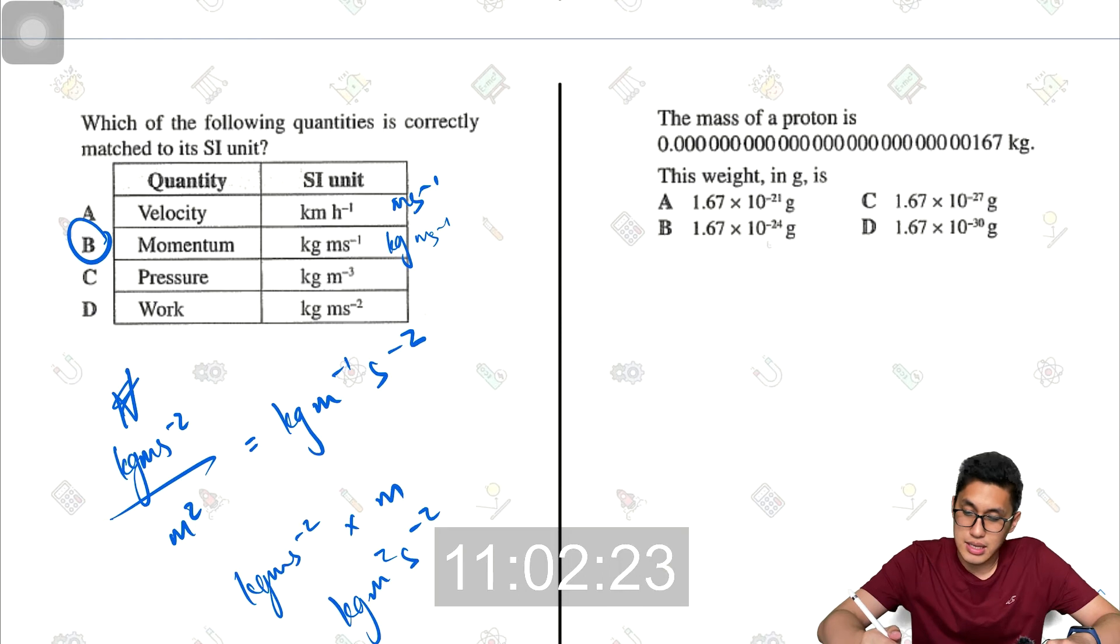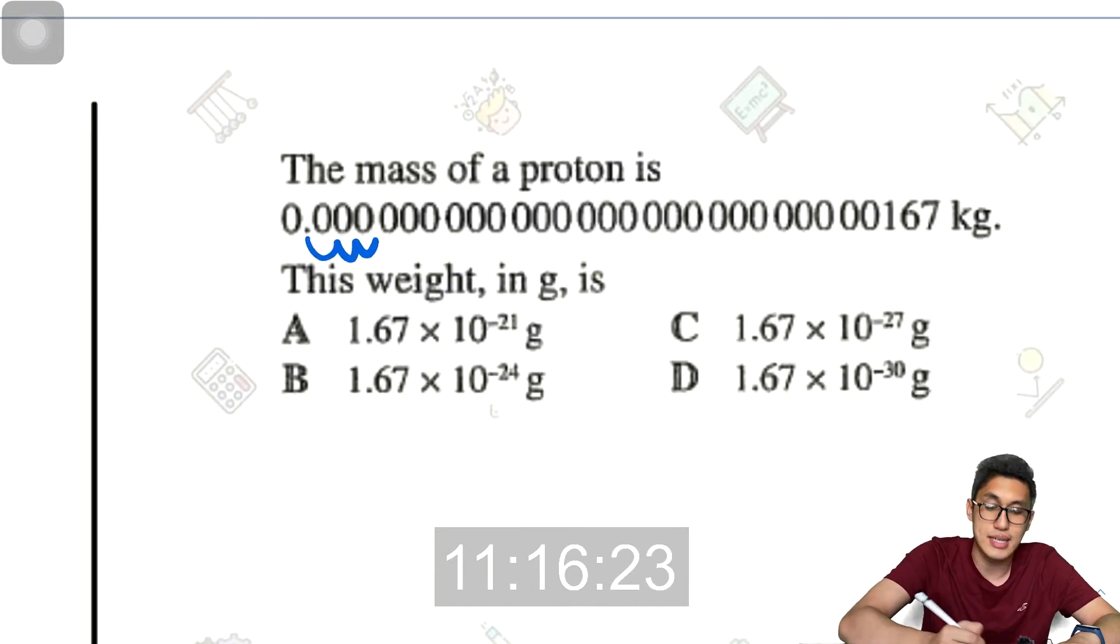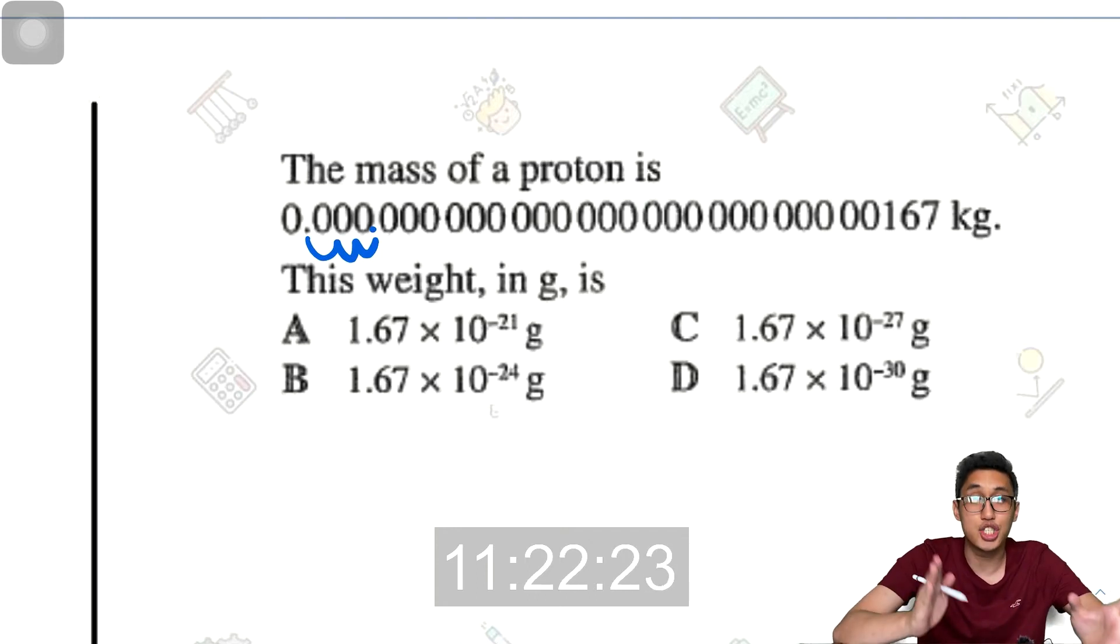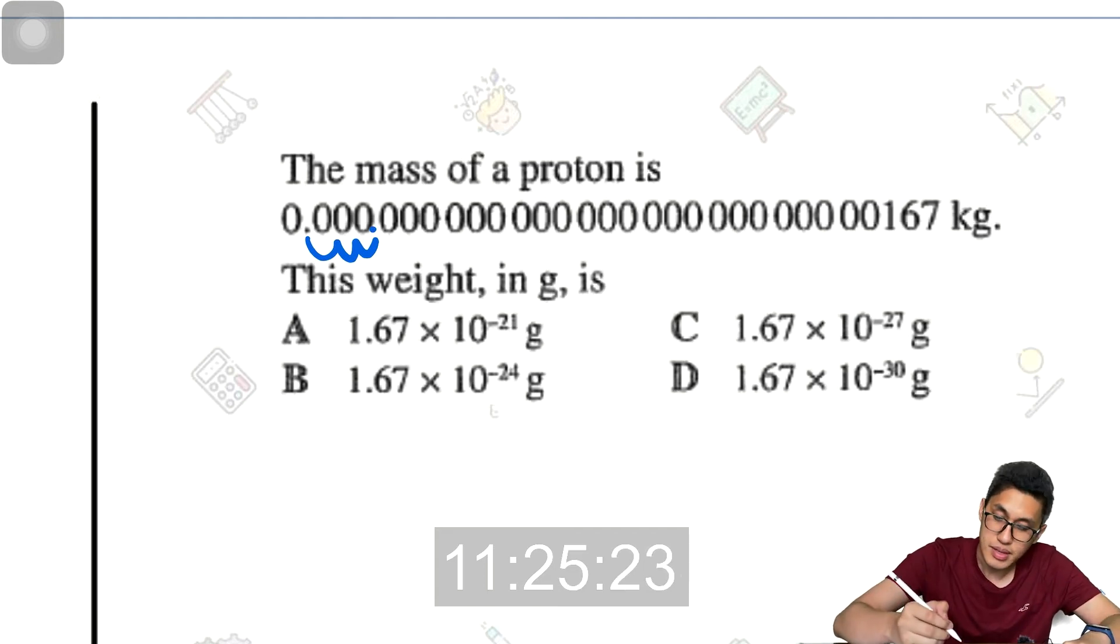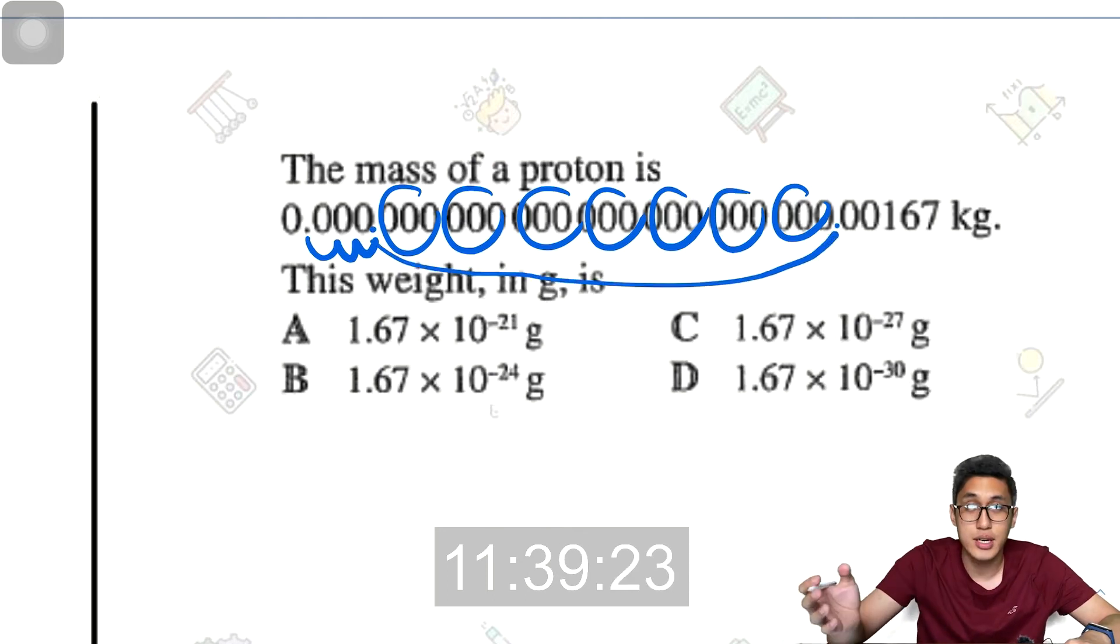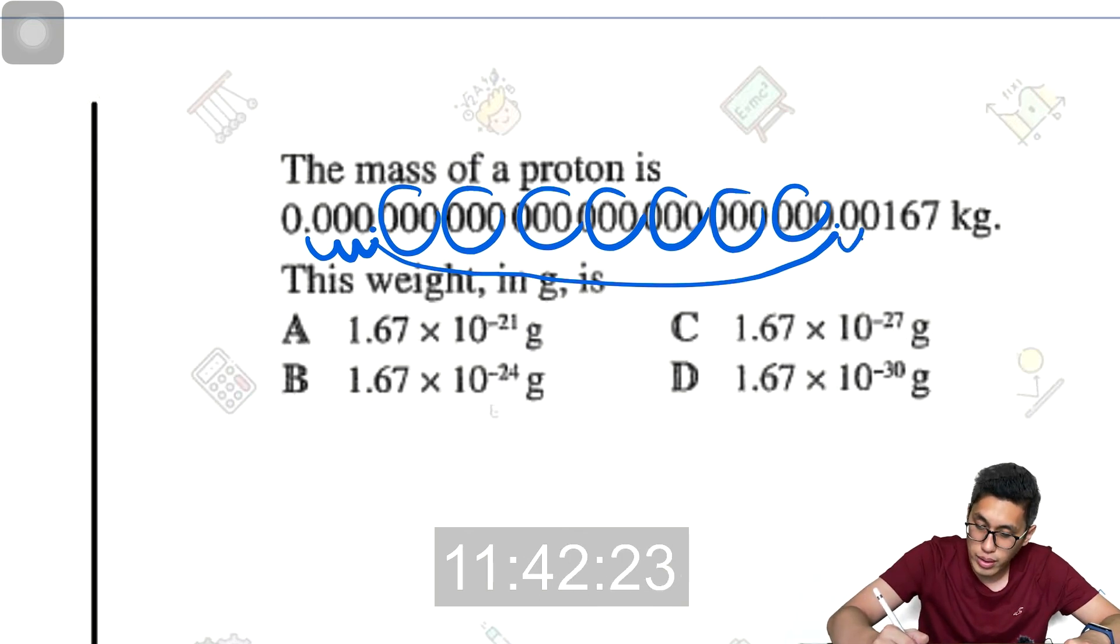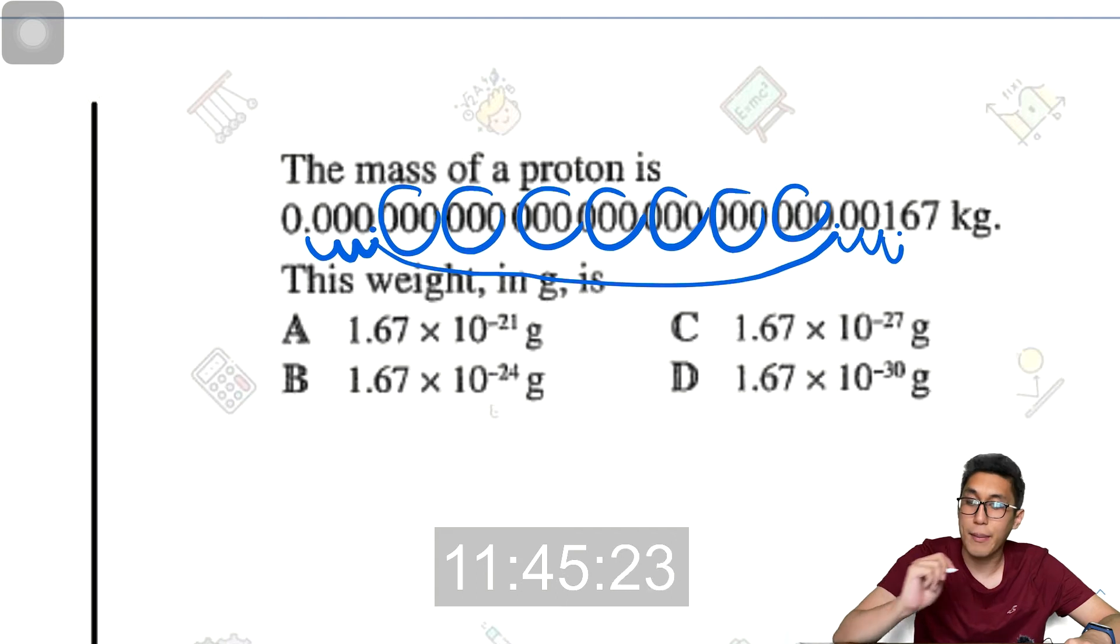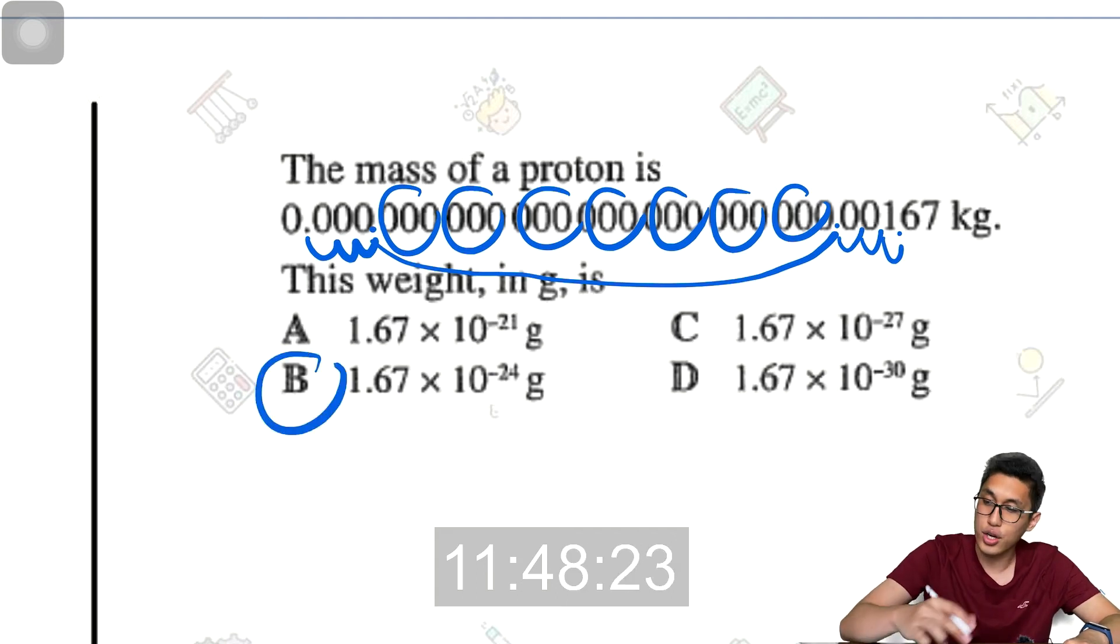The mass of the proton is 0.0000000000000000000167 kg. The weight in grams. So first, if I want to change this to grams, I have to multiply it by 1,000. And multiplying it by 1,000 would bring the decimal places back three spaces. So now, I can see that each of this is three zeros. So this is 1, 2, 3, 4, 5, 6, 7. So if my decimal places is brought all the way back here, that would be 7 times 3, so 21, and then 22, 23, and 24. So this would be 1.67 times 10 to the power of negative 24.